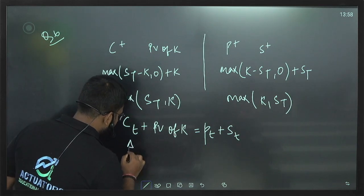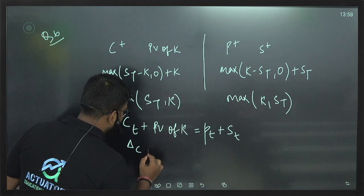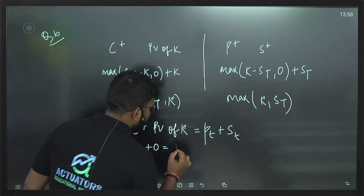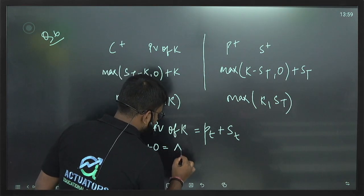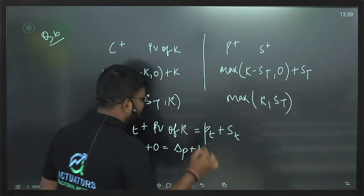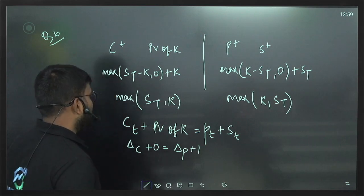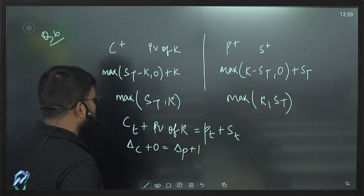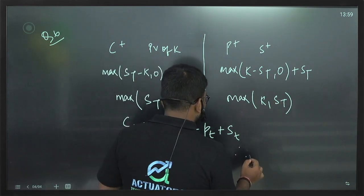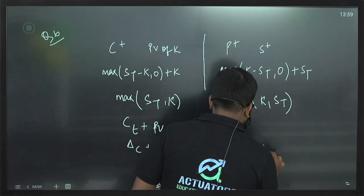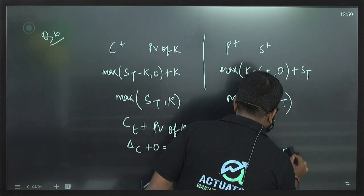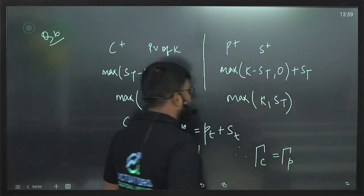Differentiating both sides with respect to S: delta of call + 0 = delta of put + 1 (since share's delta is 1). Differentiating again: gamma of call = gamma of put.